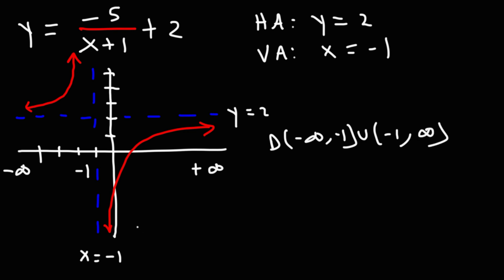Now for the range, we're going to analyze it from the bottom to the top. The lowest y value is negative infinity. Then we're going to get to the horizontal asymptote of 2, and then go up to the highest y value of positive infinity. So the range is going to be negative infinity to 2, union 2, to infinity.